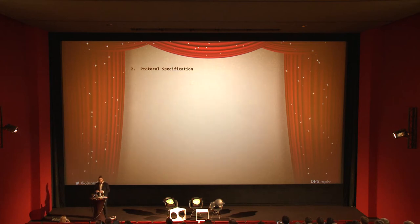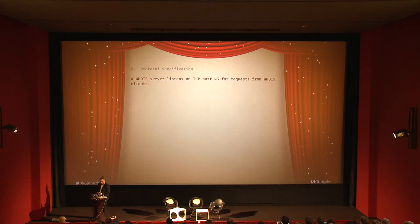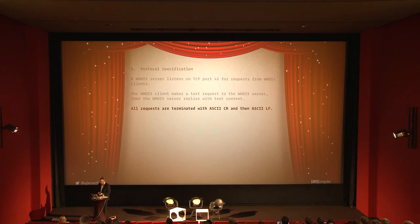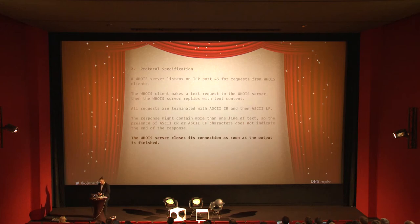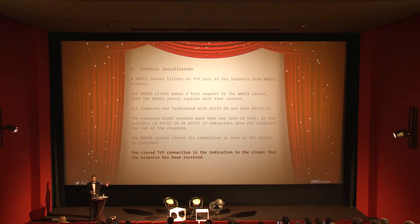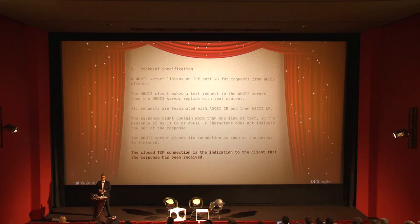I want to read the protocol specification so you can grasp what it really is. A WHOIS server listens on TCP port 43 for requests from WHOIS clients. The WHOIS client makes a text request to the WHOIS server, and the WHOIS server replies with text content. All requests are terminated with ASCII carriage return and ASCII line feed. The response may contain more than one line — the presence of carriage return or line feed does not indicate end of response. The WHOIS server closes its connection as soon as output is finished. What stood out to me is that the server can indicate whatever the client received — in modern protocols, this would never happen. The server can say it received something, but it can't guarantee it was processed or in a state good to consume.